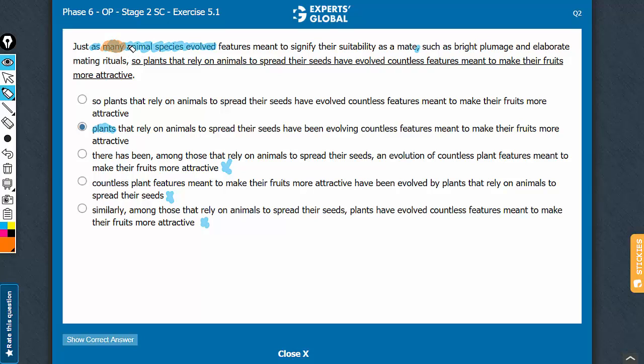So the construction is just as many animal species evolved, so plants have evolved. And if you see, from here to here is all a noun phrase. It's plants that rely on animals to spread their seeds. It's a long phrase, but still, it is a noun phrase, the noun of which is plants. So the construction is parallel. Just as many animal species evolved, so plants have evolved.